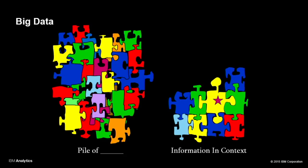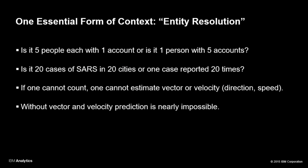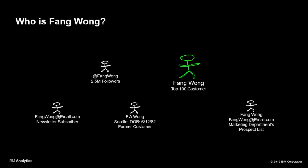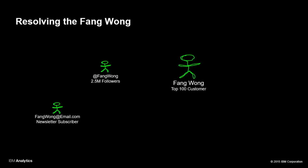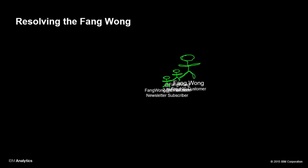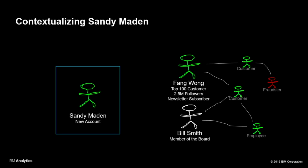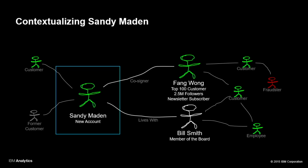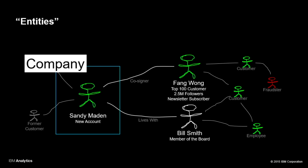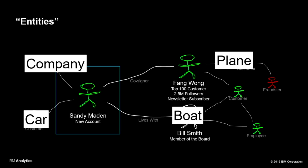There's a big difference between just a pile of big data and information in context. One of the earliest forms of context is entity resolution: is it five people with one account or one person with five accounts? Who's Fang Wang? Which of these transactions are the real Fang Wang? Entity resolution figures out it's really this person, so you've learned these things. After you resolve Fang Wang, you want to figure out the relationships between the resolved entities. If you're onboarding a new customer like Sandy Madden, you're trying to integrate this and saying, is it a known Sandy Madden or do we have a new one? And then you're graphing it. While these examples are just people, of course it could be companies, cars, boats, planes, or asteroids.